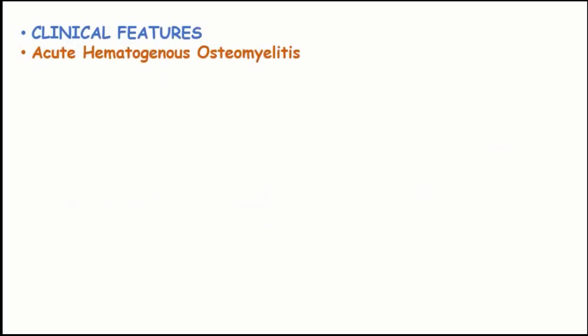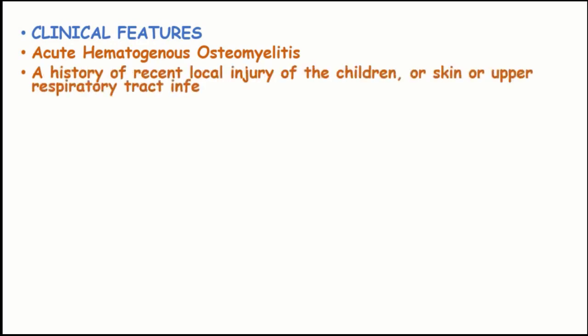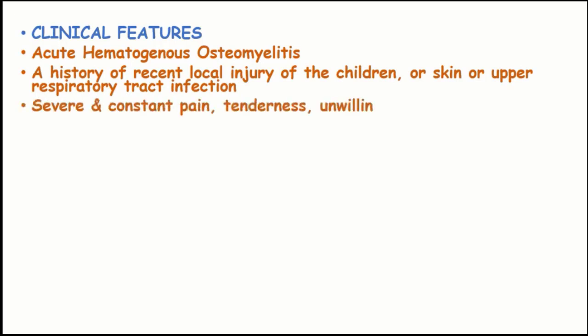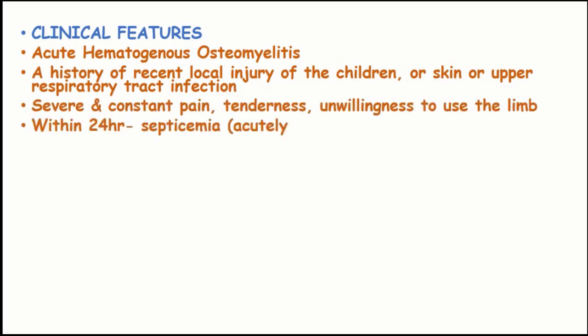Regarding the clinical features of osteomyelitis: in acute hematogenous osteomyelitis, a history of recent local injury of the skin or upper respiratory tract infection is present, along with severe and constant pain, tenderness, and unwillingness to use the infected limb. Within 24 hours, signs of septicemia will develop where the patient is acutely ill with malaise, anorexia, and fever.